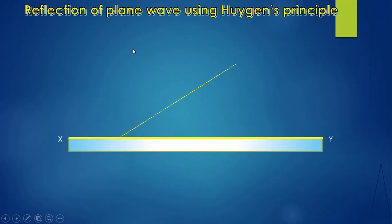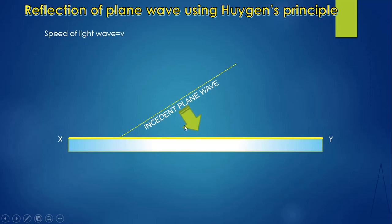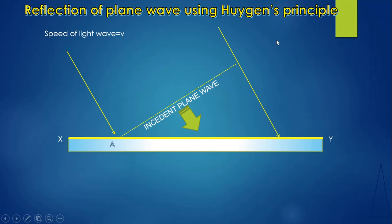We have to indicate this as the incident plane wave. The speed of the light wave is v. We indicate the direction using two arrows showing the direction in which the incident plane wave is propagating. We mark one end as A, the other end as B, and this is end C. The B end is away from the reflecting surface by a distance BC. Now we have to calculate this distance BC.